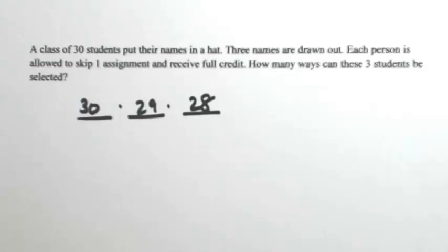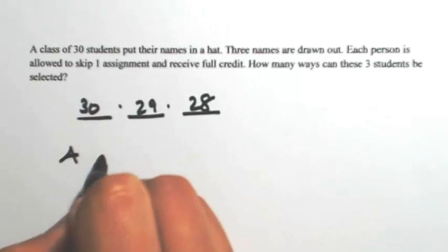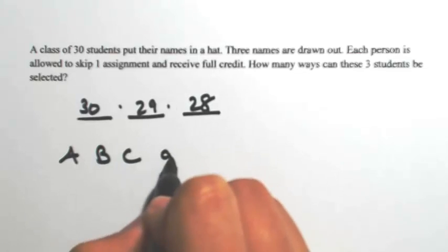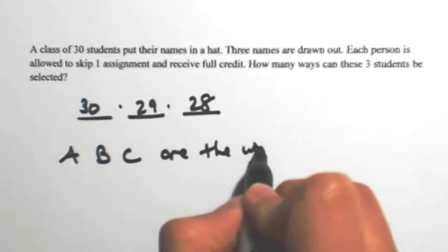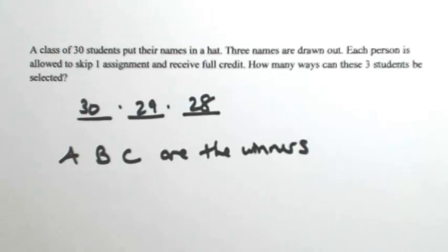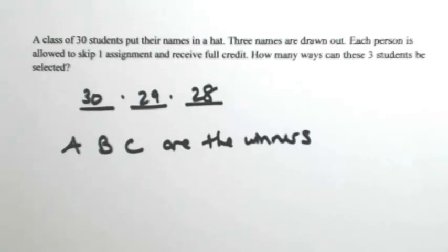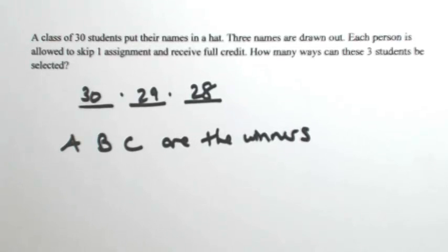But there is a difference here. Let's say, just for argument's sake, that A, B, and C are the winners. These three students' names were drawn out of the hat. Let's see how many ways there are to arrange these winners. The first way is A, B, and C.